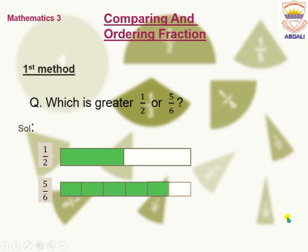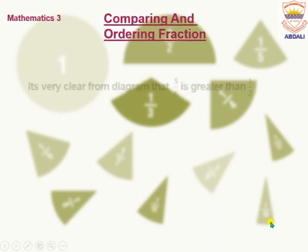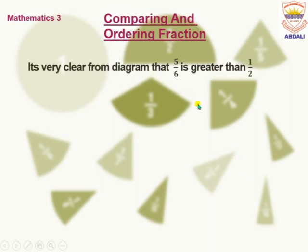Now from the diagram you can see very easily that the shaded area of 5 by 6 is greater than 1 by 2. So you can see it very clearly that our fraction 5 by 6 is greater than 1 by 2.